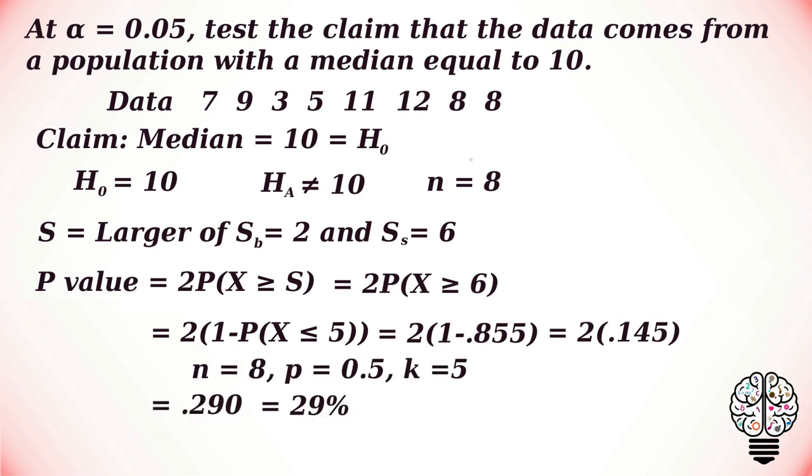So we get our p-value as 0.290, that is equal to 29%, and our alpha value is 0.05, that is 5%, which is less than our p-value. So in this case, we do not support the null hypothesis and we do not reject the alternative hypothesis.